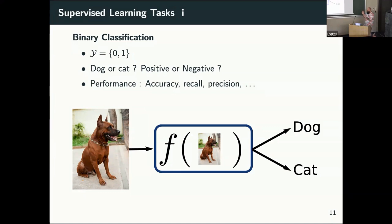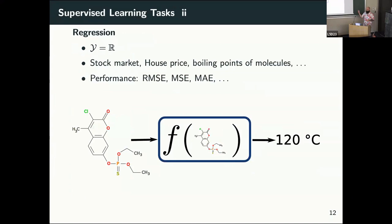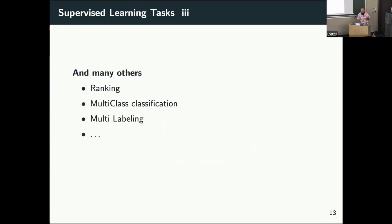Usually we try to vectorize the image and pass it to a model. But as soon as we have a molecule, we immediately start thinking about how to represent it — am I going to take all the atoms and put them in a vector? There are many ways to do that, and everything is hidden inside this F function we're trying to learn. We can also go to ranking problems, multi-class classification, and so on.